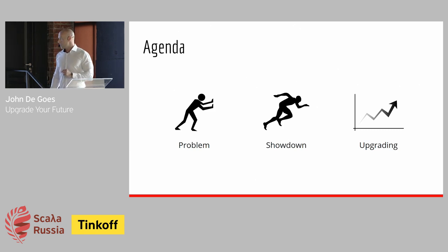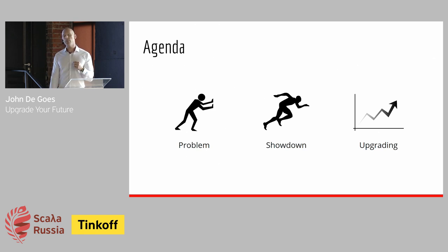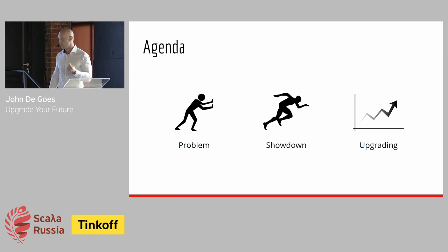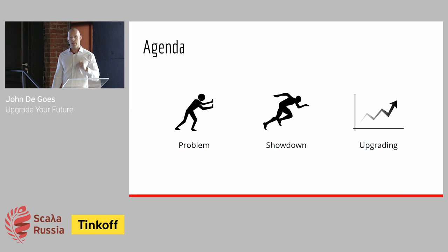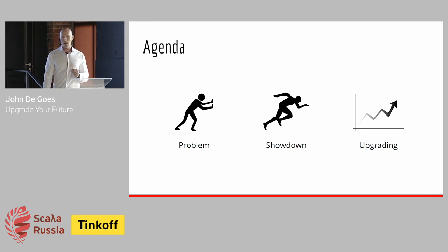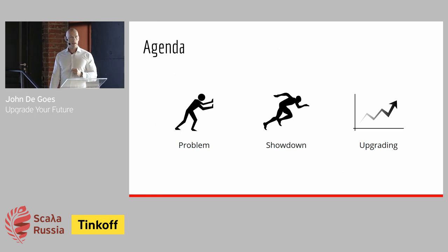Today I'm going to start by discussing the problem: why do we have Future in the Scala standard library? Why do we have functional alternatives to Future, like the library ZIO, which is one of the open source projects I work on? Then I'll dive into a head-to-head comparison between Scala's Future and the ZIO data type. And finally, I'll discuss how you could experiment with ZIO in your own project and possibly upgrade your use of Future to something that will pay for itself many times over.